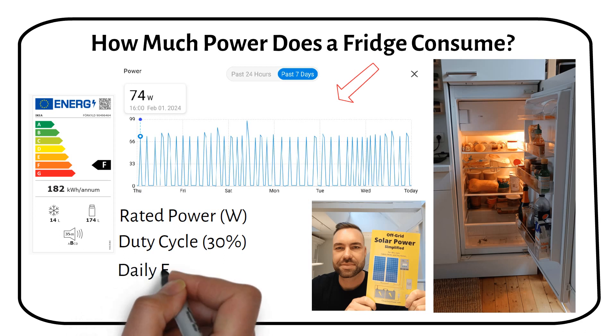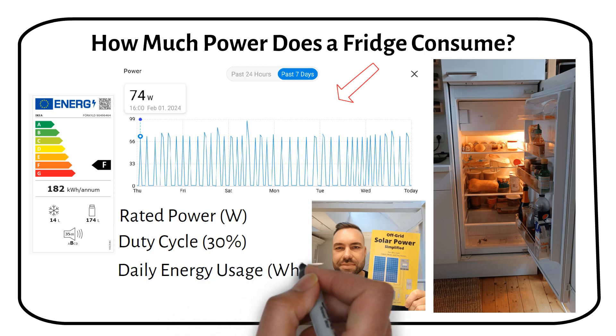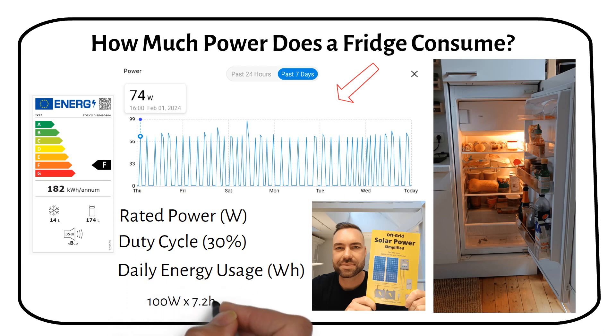Lastly, let's talk about daily energy usage. This is where we bring it all together. By combining the rated power with the duty cycle, we can calculate how much energy the fridge uses daily. A fridge with a 100 watt rating and a duty cycle of 30% uses about 720 watt hours daily. Stay tuned as we will apply these concepts to determine exactly how much power my fridge uses and how you can repeat the same calculation for yours.